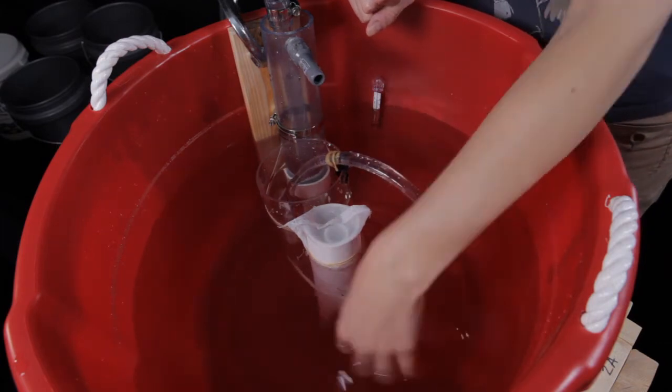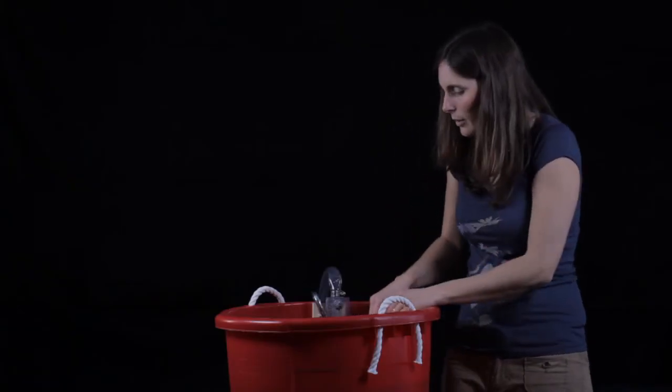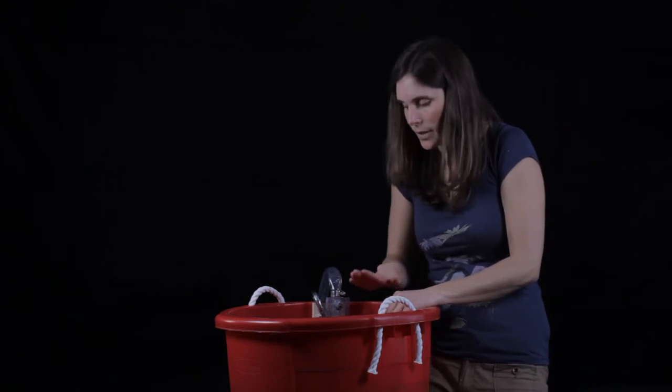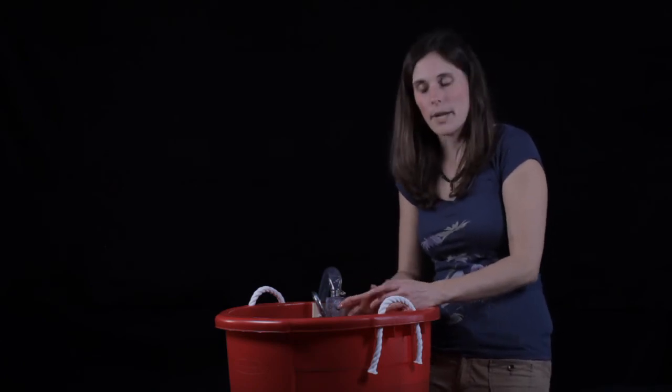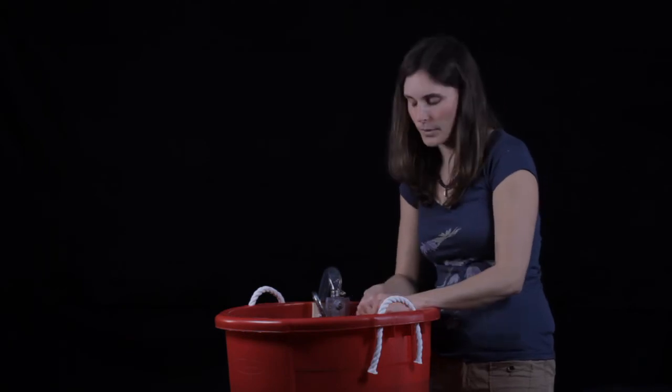So if your siphon is working properly, the water level in the fry chamber should drop to the same level as the water in the main upper reservoir, and it should happen relatively quickly. So if it doesn't happen right away, you'll just want to take the siphon out and try again to get all those air bubbles out of it.